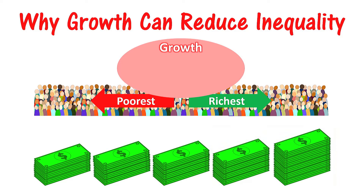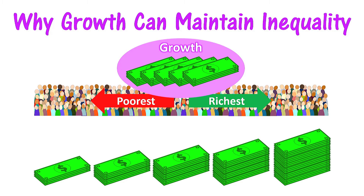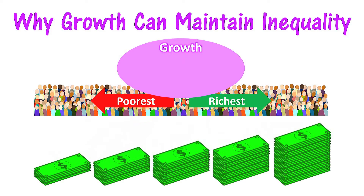This is how growth can reduce inequality. The second possible result of economic growth is that the degree of inequality can remain the same. The growth can be distributed in such a way that both the richest and bottom people receive more income and/or wealth, but the amount each group receives maintains the existing level of inequality. Thus, growth will not necessarily change the degree of inequality.